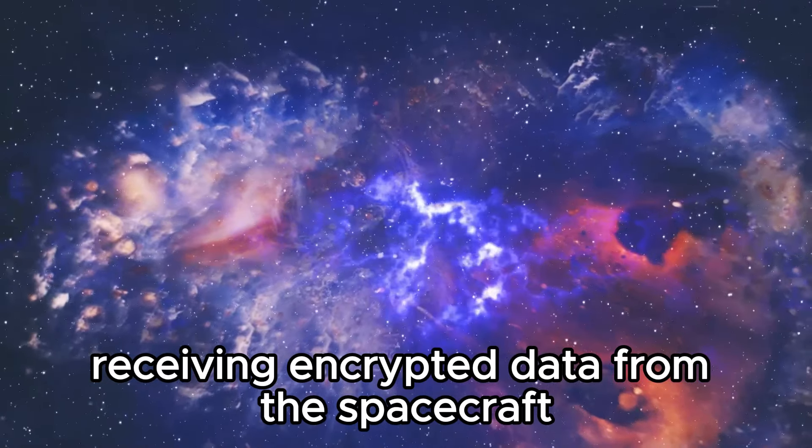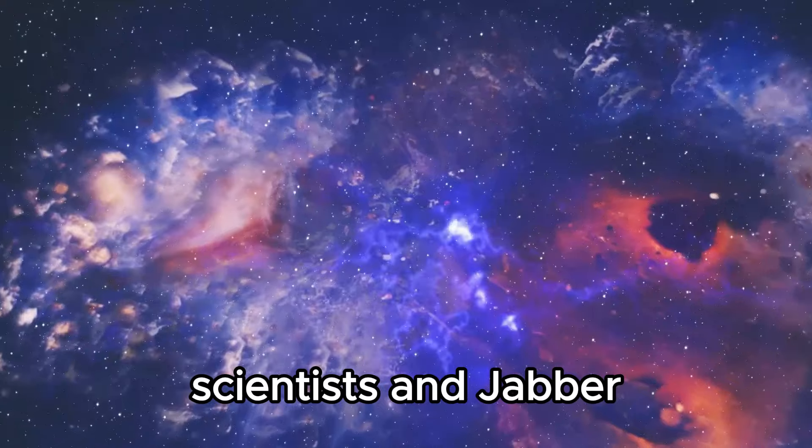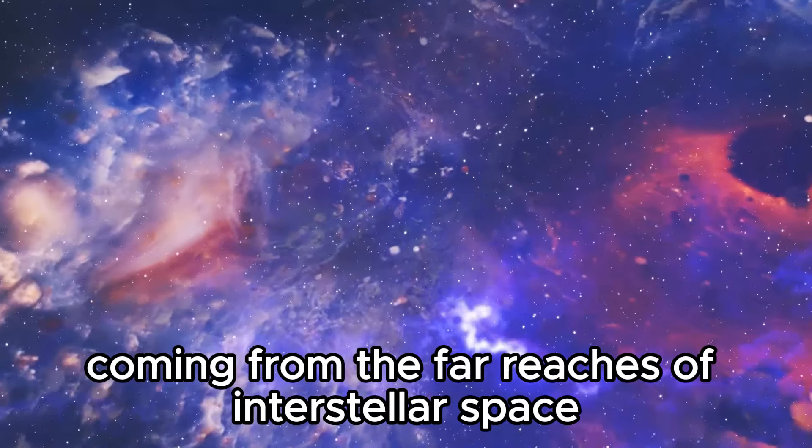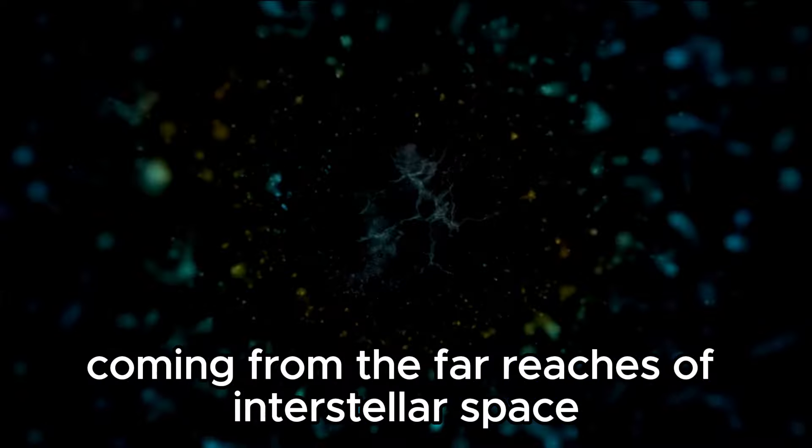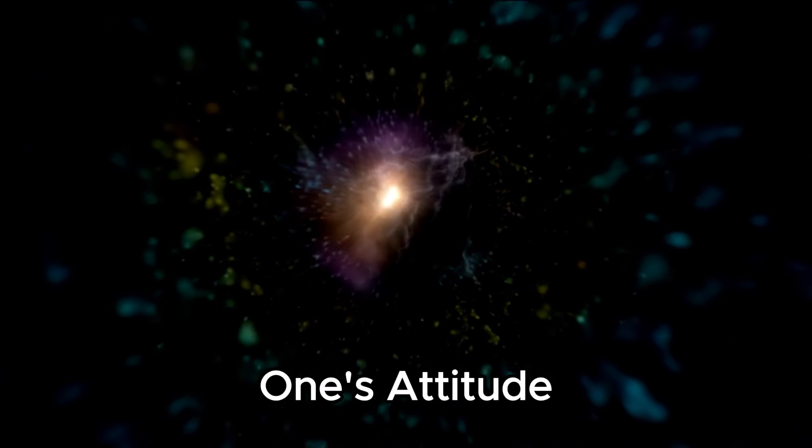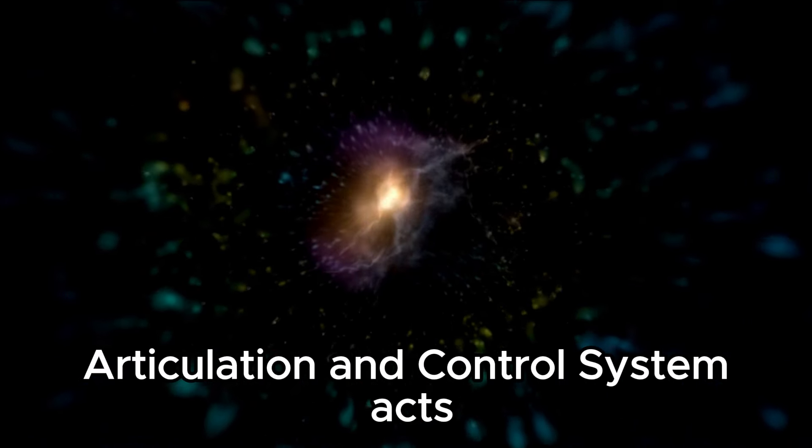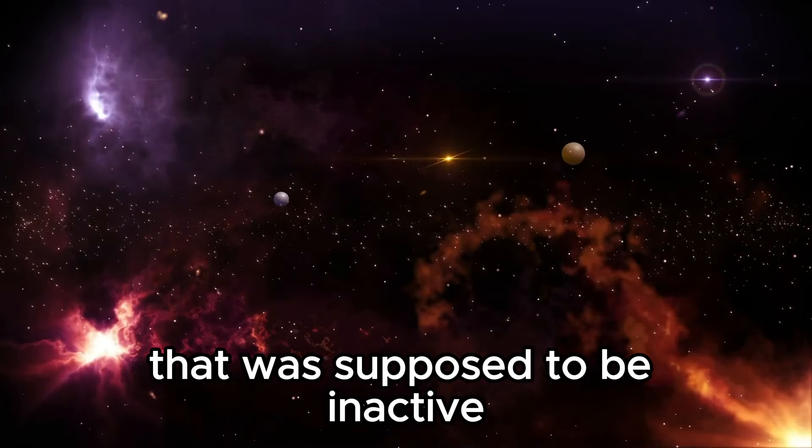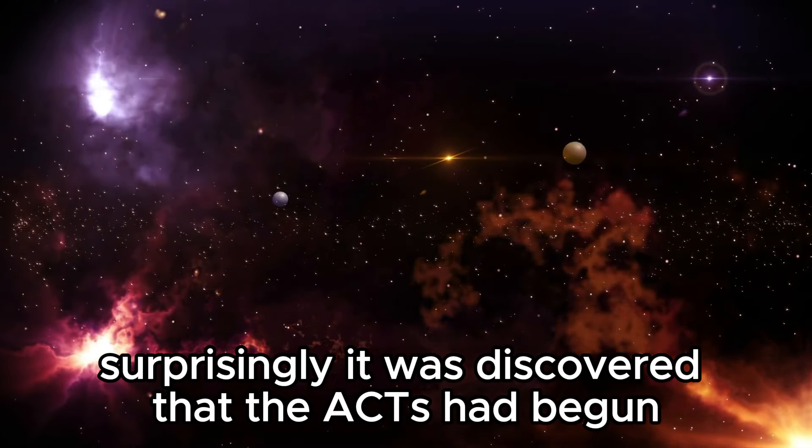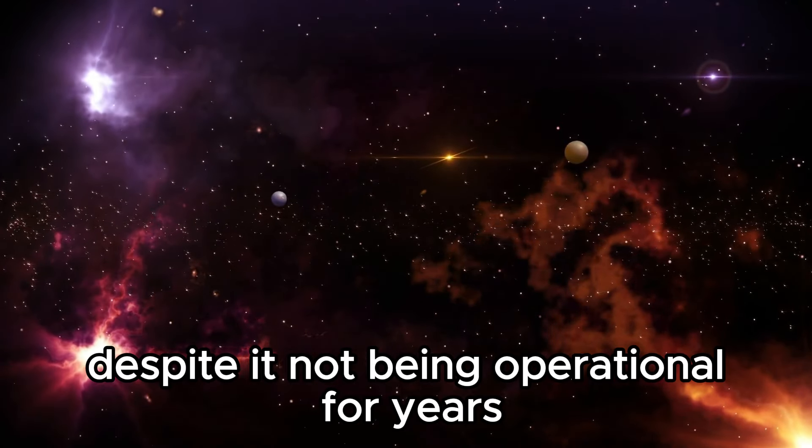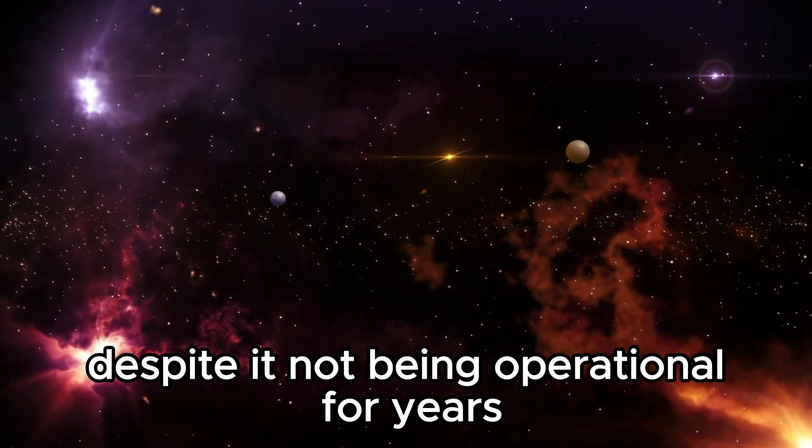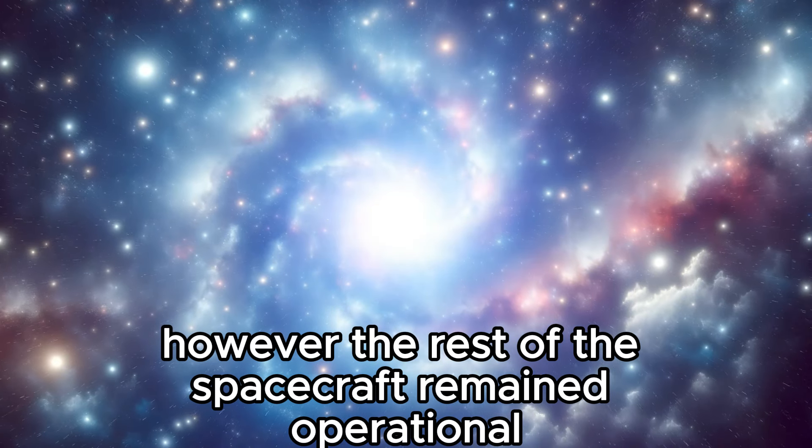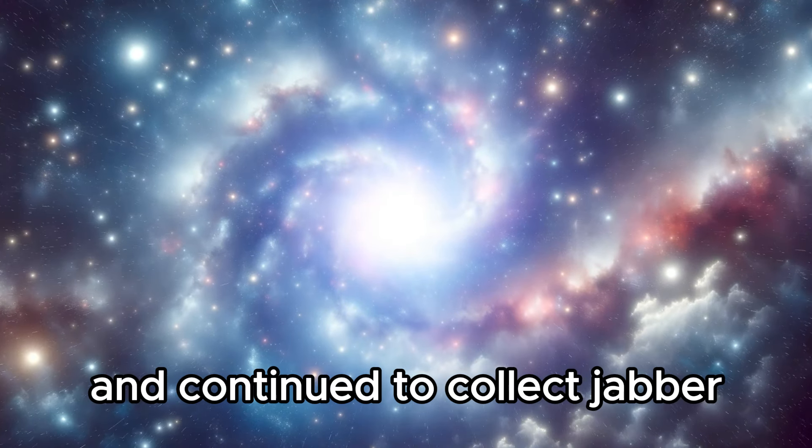After months of receiving encrypted data from the spacecraft, scientists and engineers were finally able to restore clarity and reliability to the information coming from the far reaches of interstellar space. The cause of the problem was traced back to Voyager 1's Attitude, Articulation, and Control System, specifically in a computer that was supposed to be inactive. Surprisingly, it was discovered that the system had begun using the computer despite it not being operational for years, leading to corruption of the telemetry data. However, the rest of the spacecraft remained operational and continued to collect data.